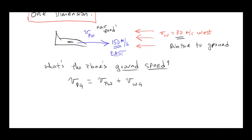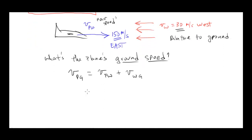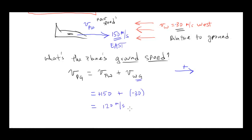Now it's a relatively straightforward calculation. The velocity of the plane relative to the ground equals the velocity of the plane relative to the wind plus the velocity of the wind relative to the ground. Let's call east the positive direction, so the plane relative to wind is positive 150, and the velocity of the wind relative to the ground is negative 30 — since west is negative. So the velocity of the plane relative to the ground is just 120 meters per second, positive meaning east. You certainly could have figured this out without doing the math — they're opposite from one another, so you'd just subtract them.